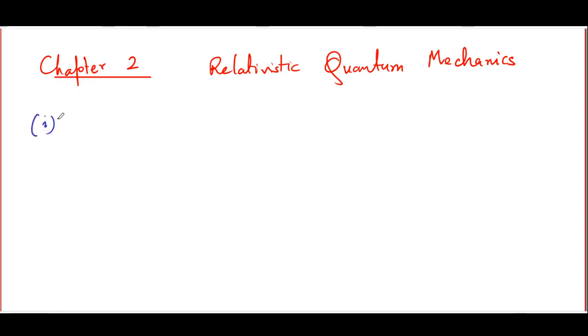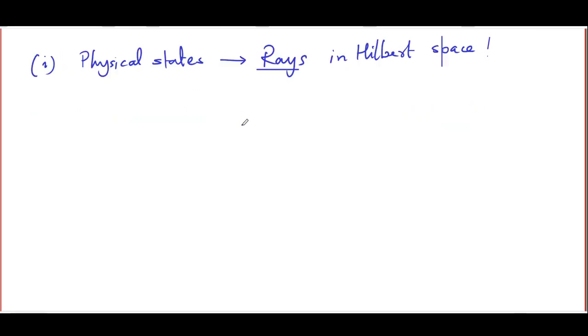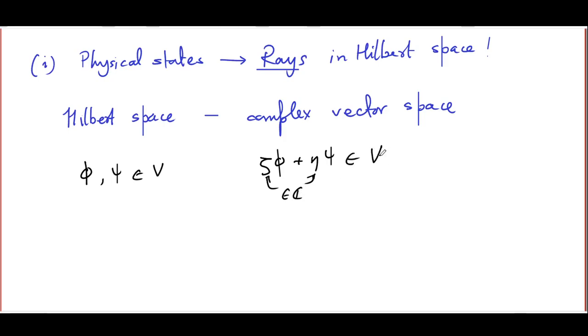The first thing that we have to note is physical states are represented by what are called rays in Hilbert space. So what exactly is a Hilbert space? A Hilbert space essentially is a complex vector space, which means that given any two of its elements, phi and psi which belong to the Hilbert space, any linear combination of phi and psi with complex coefficients, zeta phi plus eta psi, where zeta and eta are complex numbers, will also belong to the vector space. That is not all. It has to have an inner product.